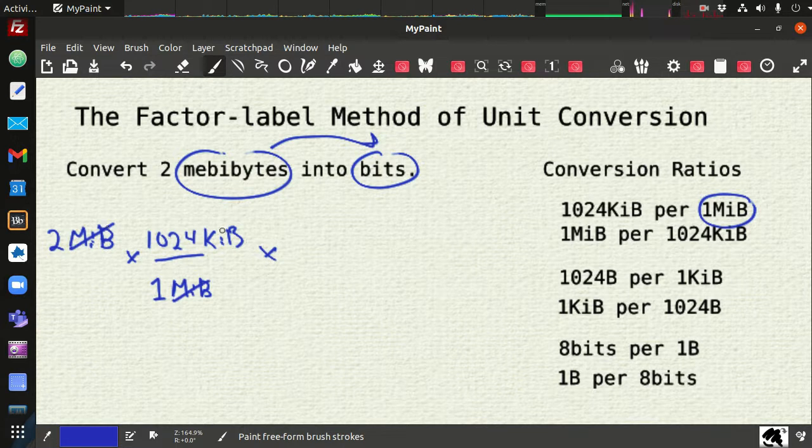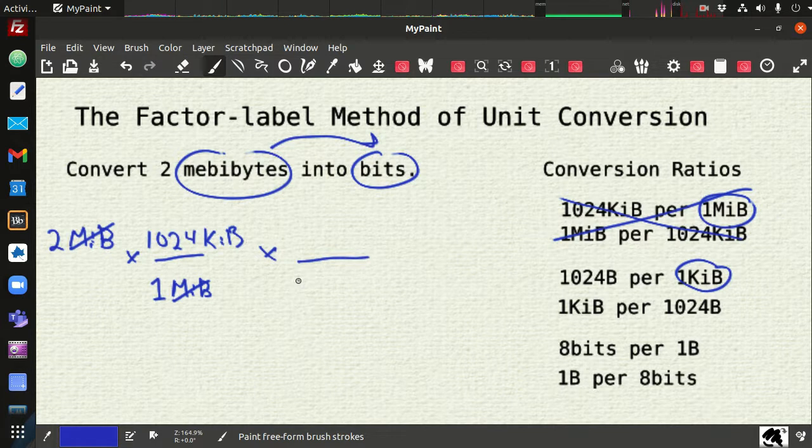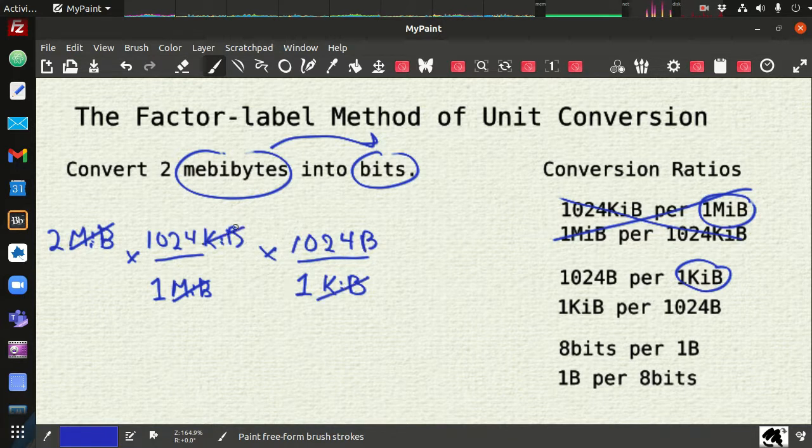1,024 kibibytes. Now we want to go from, we're done with these conversions. Now we want to go from kibibytes into something else. So let's look here. Here's kibibytes. So we can go to bytes. There's 1,024 bytes per kibibyte. We want kibibyte here in the bottom. So 1 kibibyte. And there's 1,024 bytes. And we see kibibyte now cancels out.